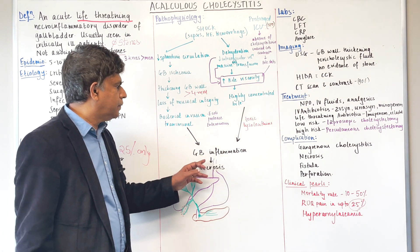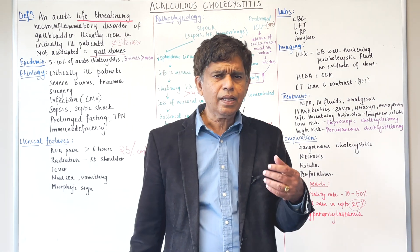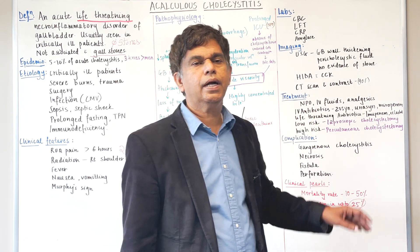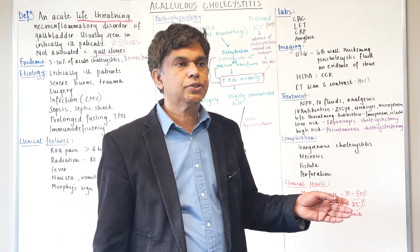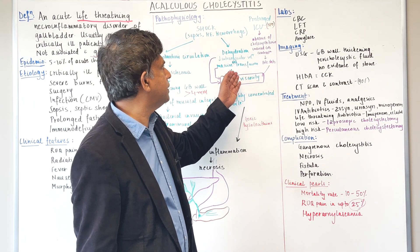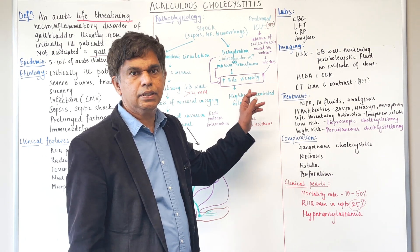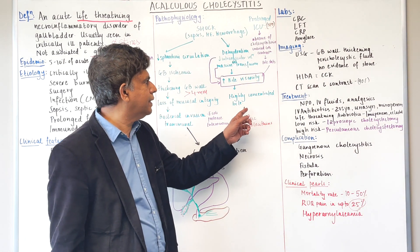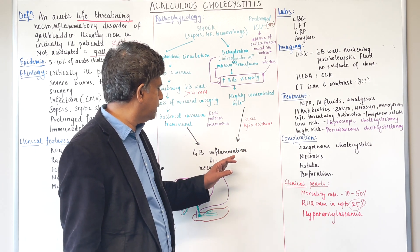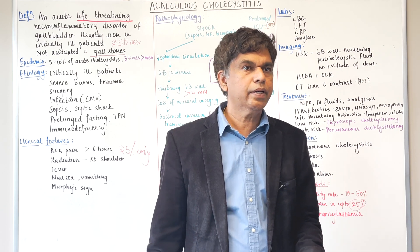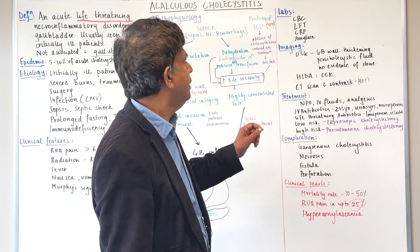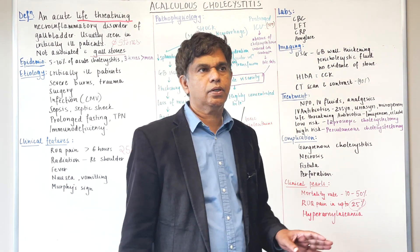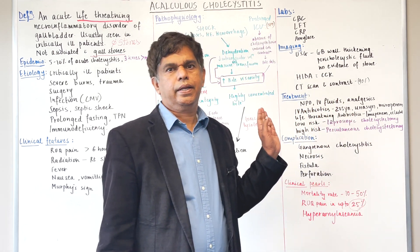Bacterial invasion causes gallbladder inflammation, which can progress to perforation and gangrene. The second pathway is dehydration and intermittent fasting, which decreases intravascular volume and increases bile viscosity. Massive transfusion also increases viscosity. Prolonged ICU stay leads to decreased cholecystokinin, causing biliary stasis and further increased bile viscosity. Concentrated bile releases toxic lysosomal enzymes, leading to inflammation, necrosis, perforation, sepsis, and death — all without any stones.